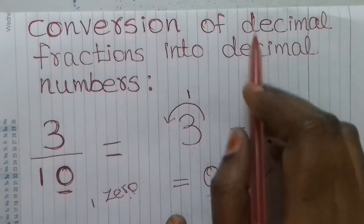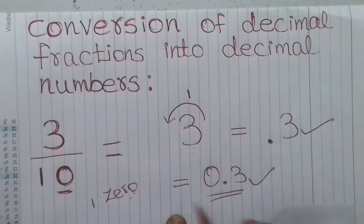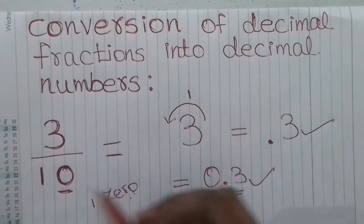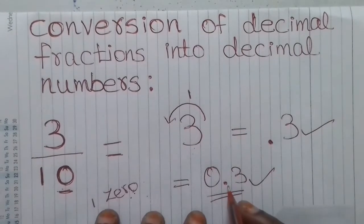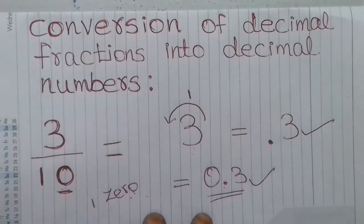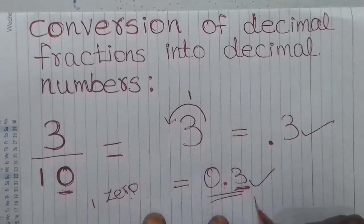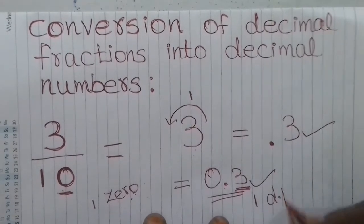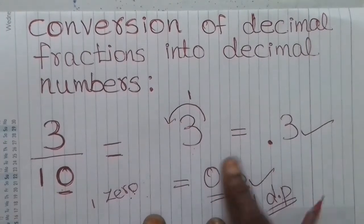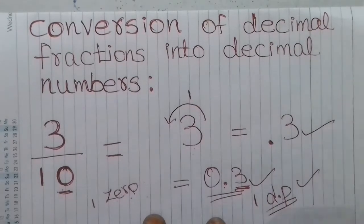When converting a decimal fraction to a decimal number, if there is one zero in the denominator you move the decimal point one place to the left. This gives 0.3. To cross-verify: look at the decimal part — there is one digit, so there is one decimal place, which matches one zero in the denominator. The answer is correct.